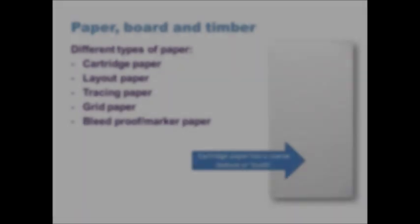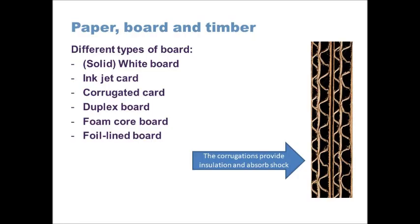The next material group is board, which can be called board, cardboard, or card — these terms essentially mean a heavyweight paper. Paper is measured by GSM, which stands for grams per square meter, meaning for every square meter of the product it will weigh a certain number of grams. For something to be considered a board it needs to be 200 grams per square meter or above; otherwise it's considered some form of paper.